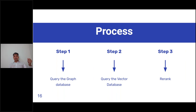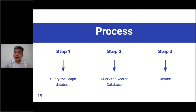You query the graph database for your structured data and the vector database for your unstructured data. Combining those two things together is how you rank your unstructured data to get a super relevant result.